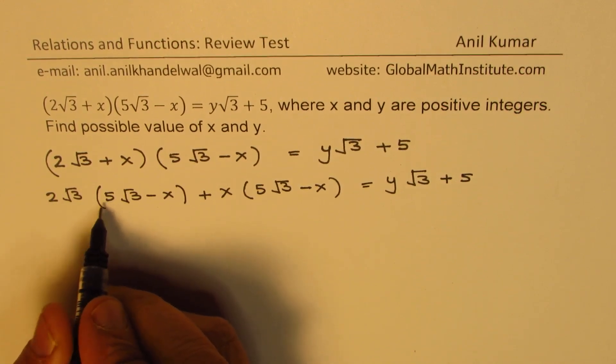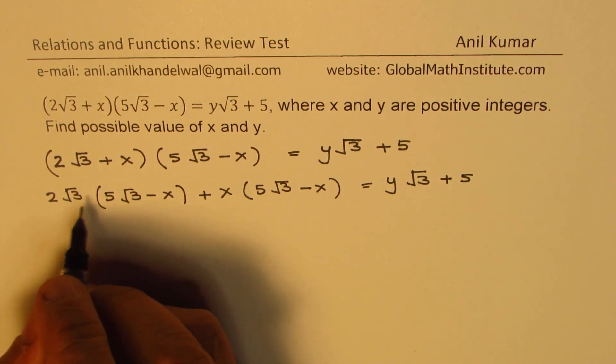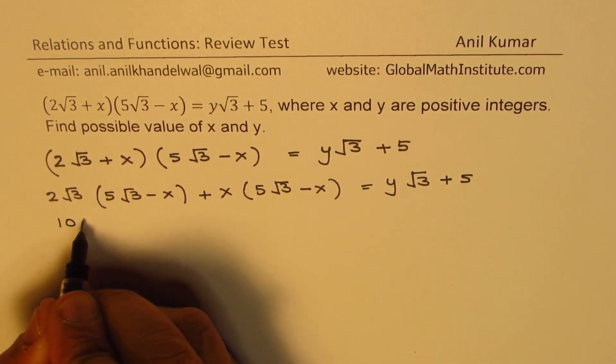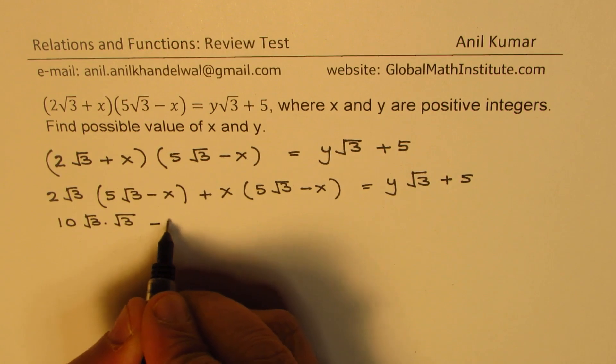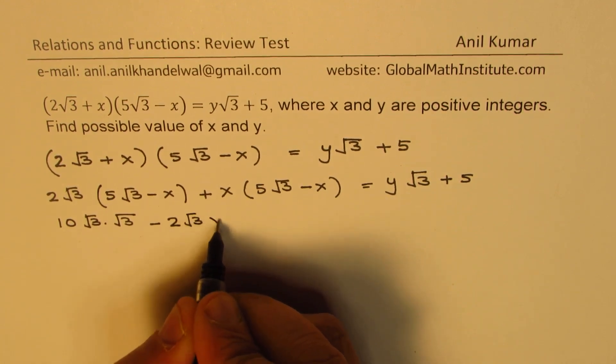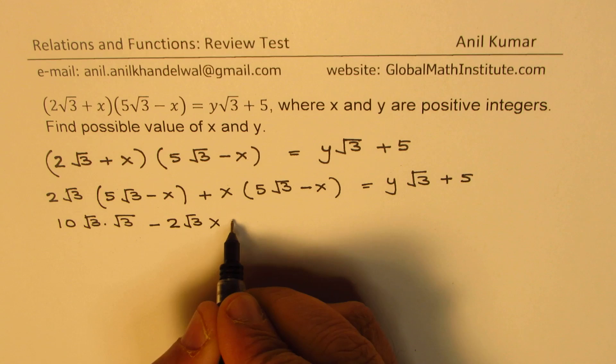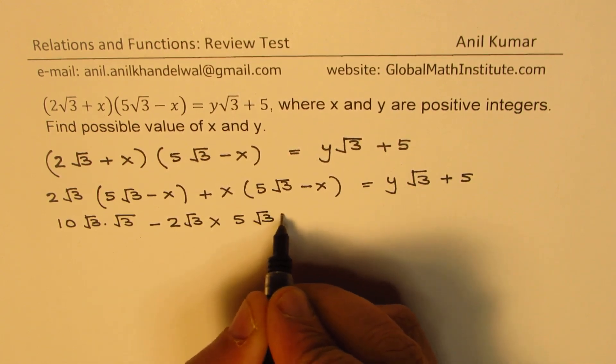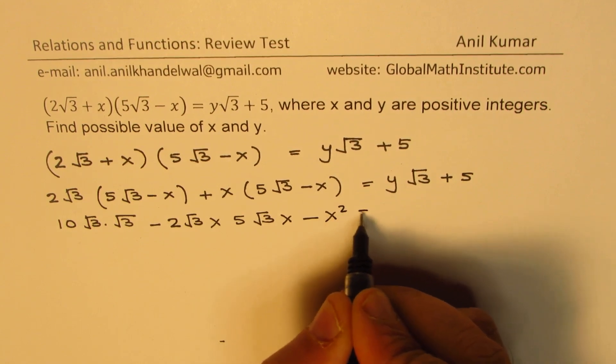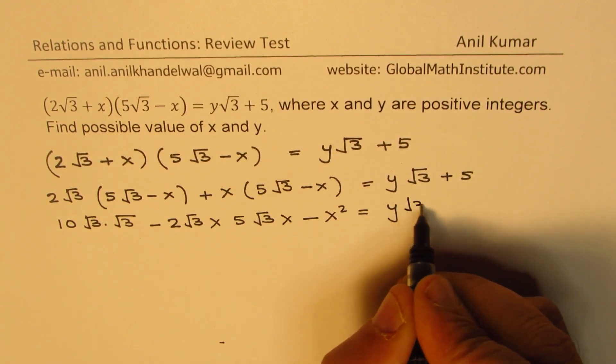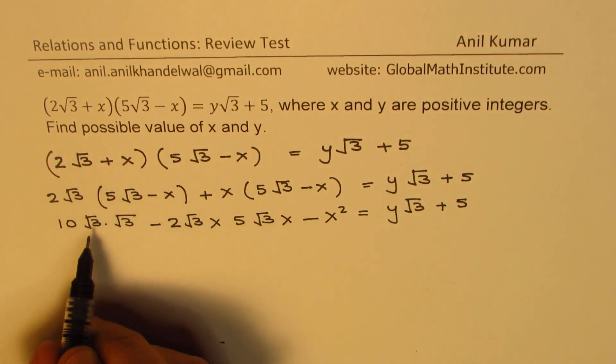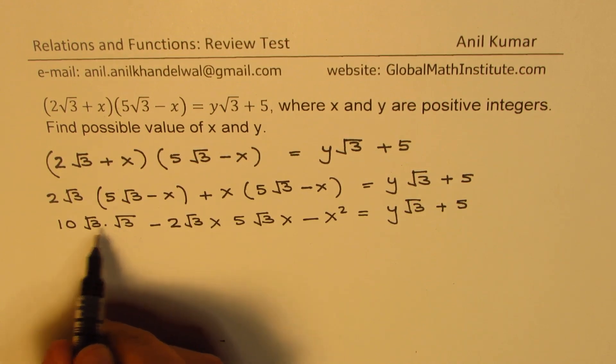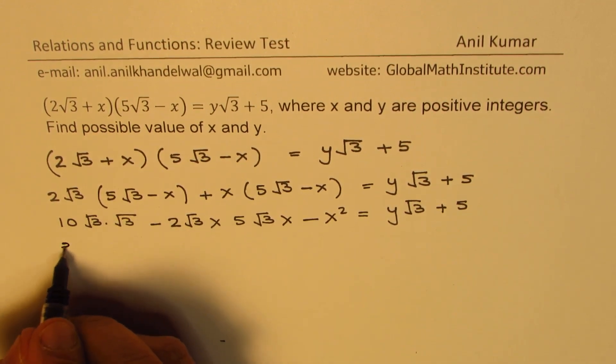So 2 times 5 is 10 and then √3 times √3 is 3. So what we get here is, let me rewrite, we will get 10 times √3 times √3, right? And here we get -2√3x. Then we get +5√3x - x² equals to y√3 + 5. Now √3 times √3 is 3. So 3 times 10 is 30. So write this as 30.